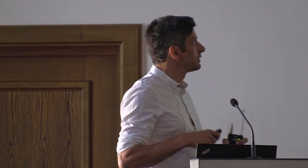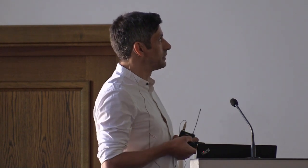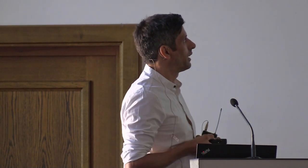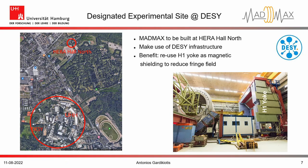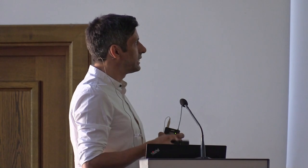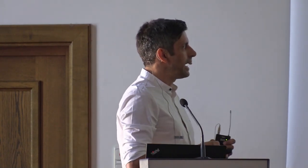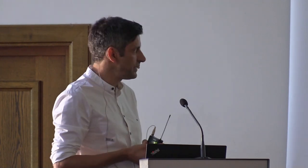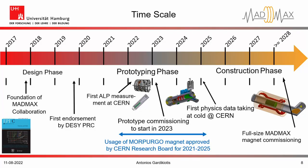MadMax will be located at the designated experimental site at DESY, built in the Hera Hall North, making use of the DESY infrastructure. The benefit is to reduce the H1 yoke, and we will have shielding to reduce the fringe field produced. About the time scale, we are currently in the prototyping phase, and we have already performed first ALP measurements at CERN. We will start prototype commissioning in 2023. Importantly, we have the ability to use the Morpugo magnet at CERN, which has been approved by the CERN Research Board for the years 2021–2025.